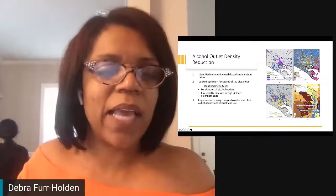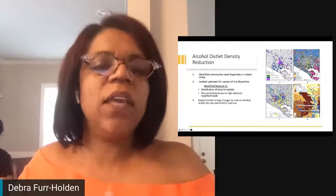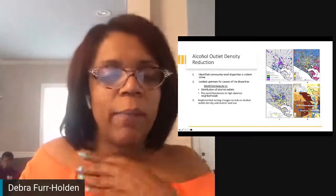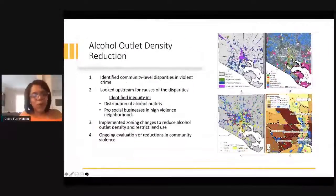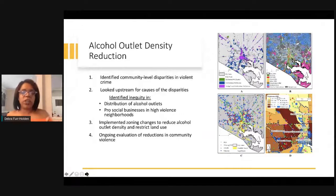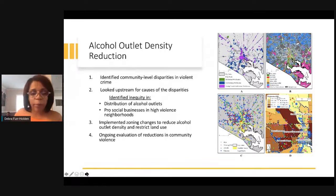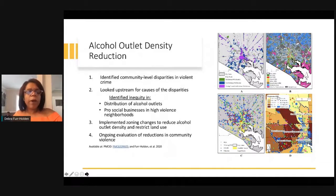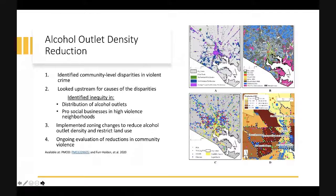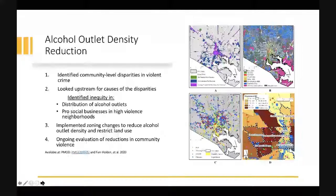The fourth step is ongoing evaluation of the work and impact. We're doing ongoing evaluations of reductions in community violence and looking for where we need to tweak, because we saw strides in some communities, but the goal wasn't to displace the problem — it was to mitigate it. We have two published articles: one from 2019 with PMC ID 633-9605, and another by Holden et al. 2020 published in Health in Place.